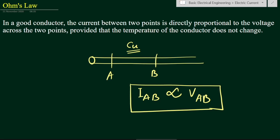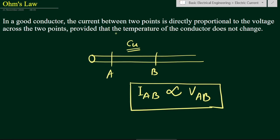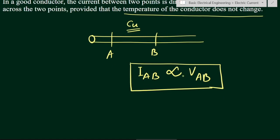The current is directly proportional to the applied voltage or the potential difference between these two points. The second part states: provided that the temperature of the conductor does not change. From this relation we can also write that V is proportional to I.